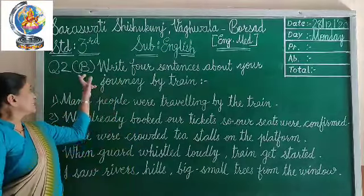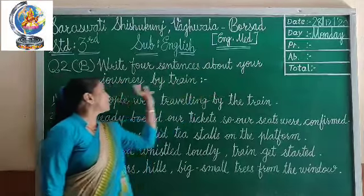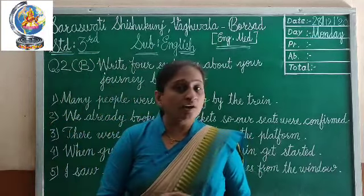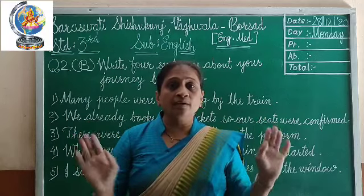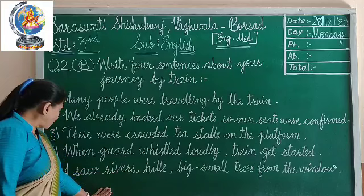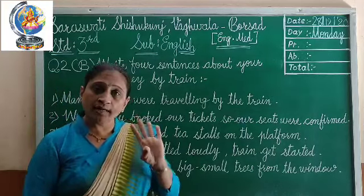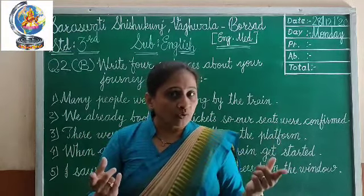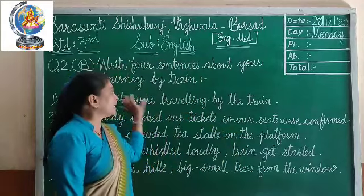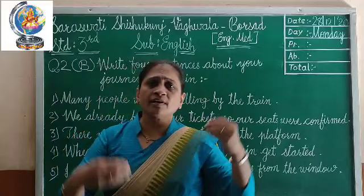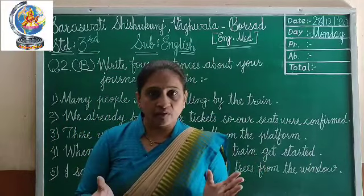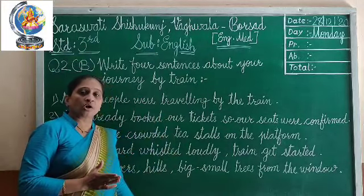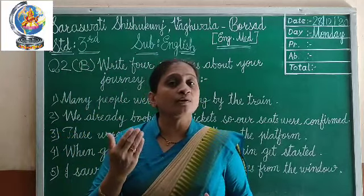This is Question 2B: write four sentences about your journey by train. Here you have to write only about a journey by train, not by bus or aeroplane. I have written five sentences here — you can write only four sentences, and you can write your own sentences. No need to write the same sentences in your exam.